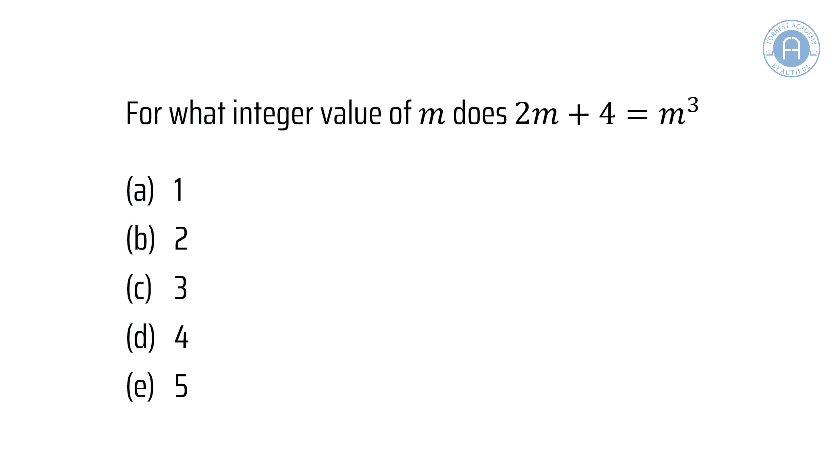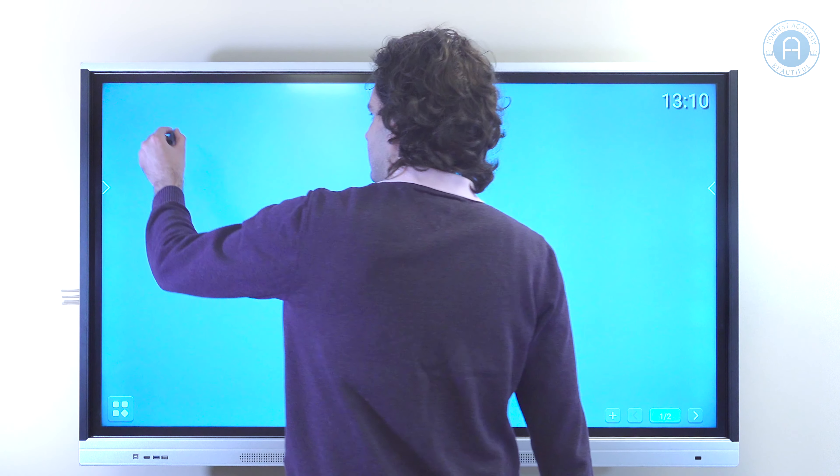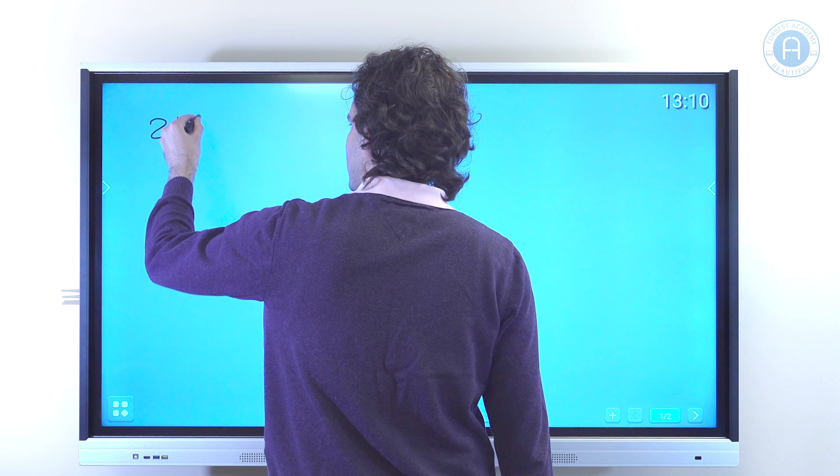Okay, so to do this question we use a trial and error approach. We have 2m plus 4 equals m to the power of 3.